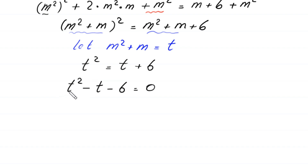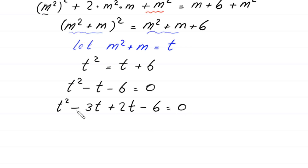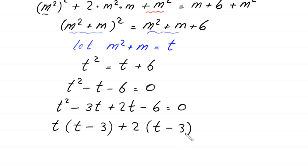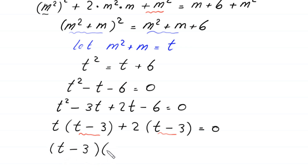This quadratic is factorable. We split the middle term: t² - 3t + 2t - 6 = 0. Factoring in groups: t(t - 3) + 2(t - 3) = 0. Since (t - 3) is a common factor, we get (t - 3)(t + 2) = 0.